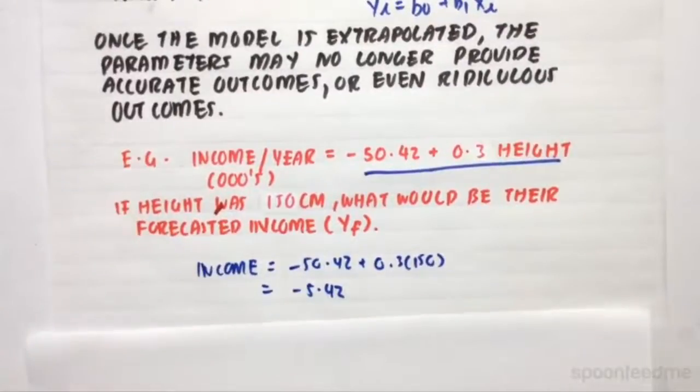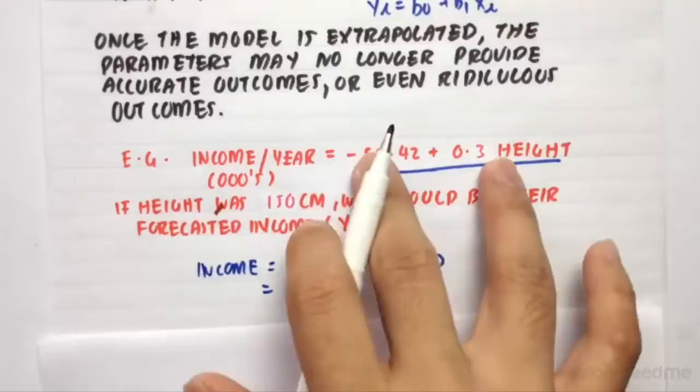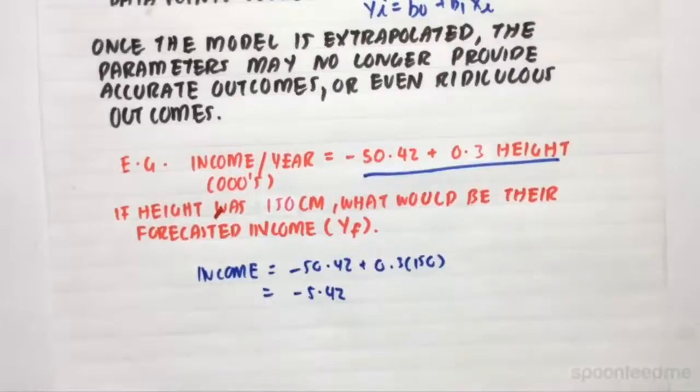Obviously, they used data points that were actually larger. And as a result, this kind of relationship won't work if you take this model out of context of what it was created from.